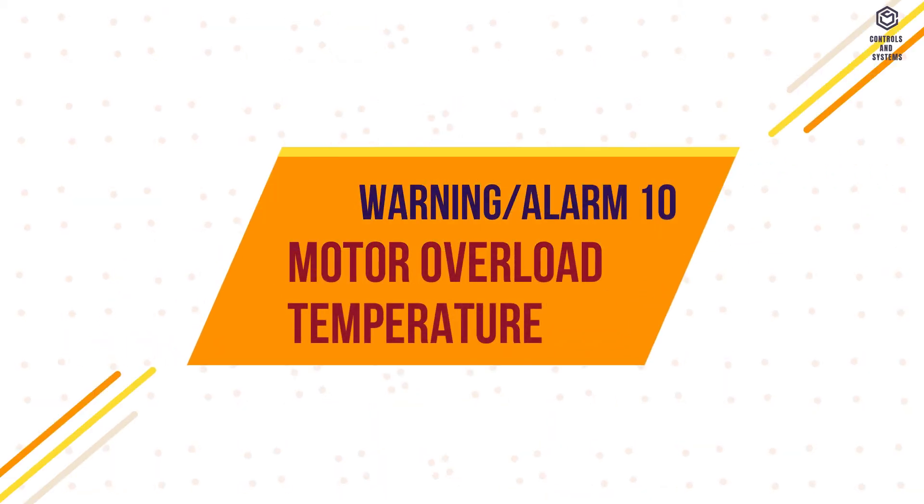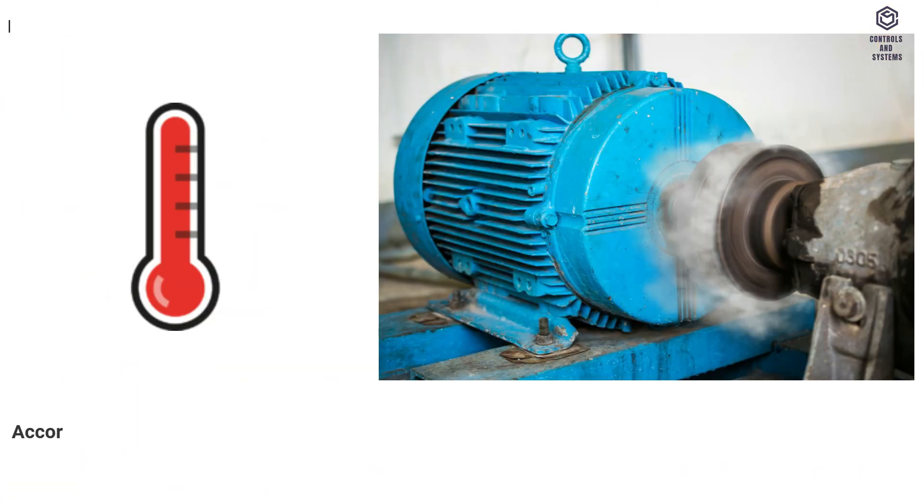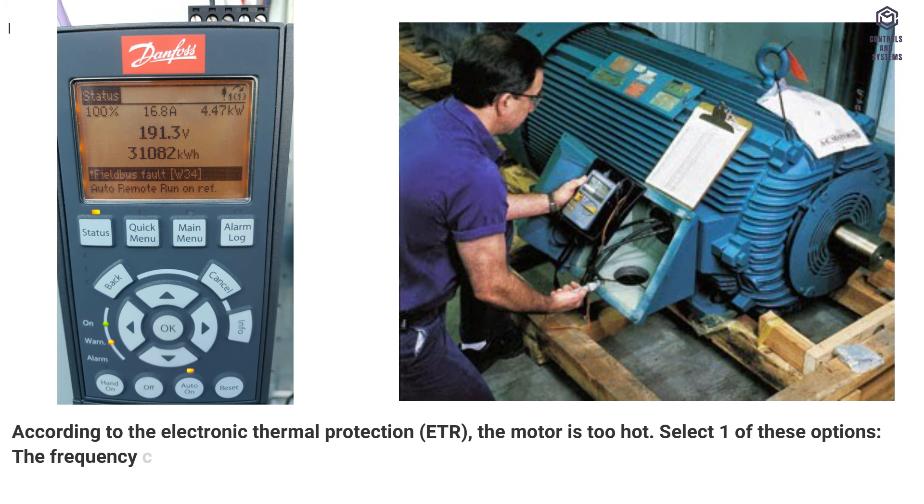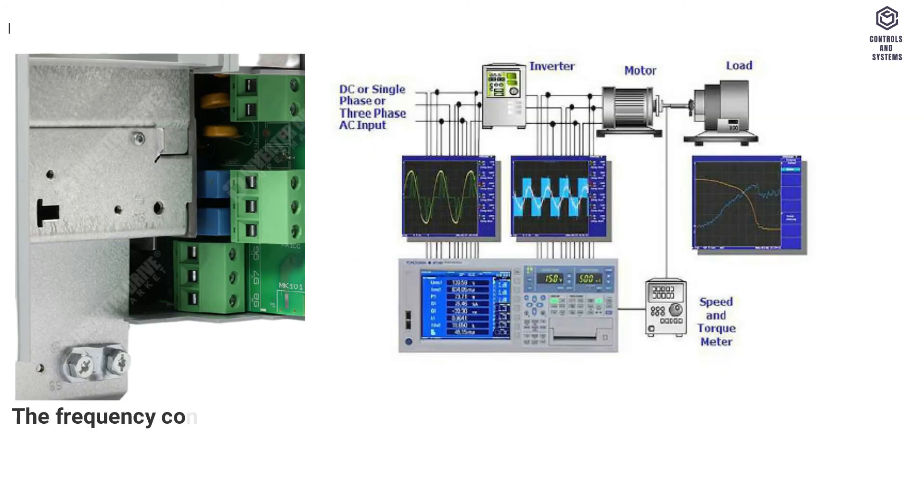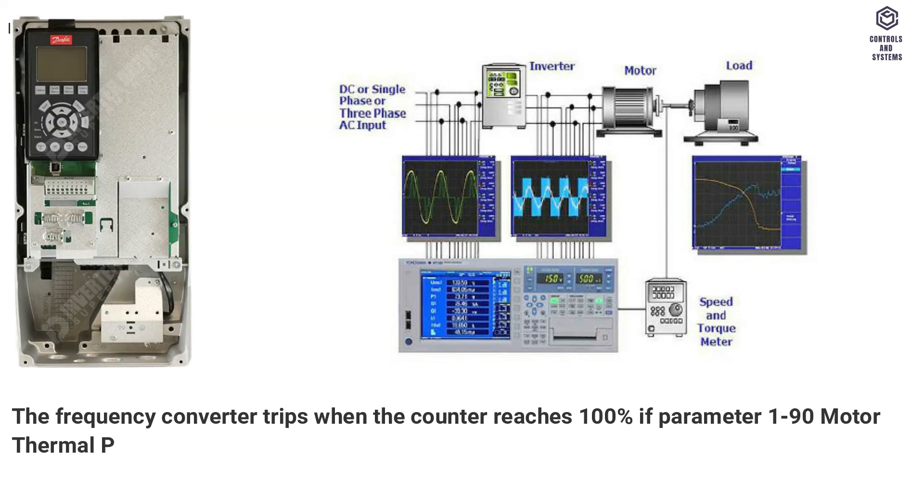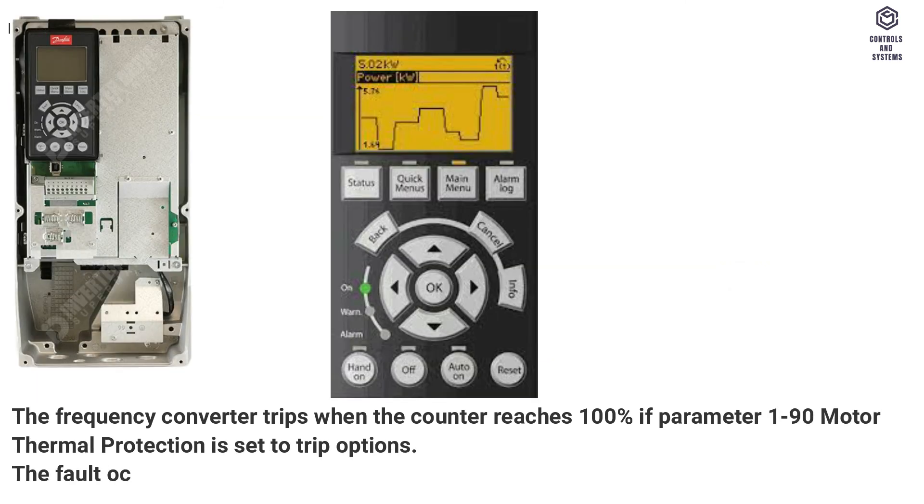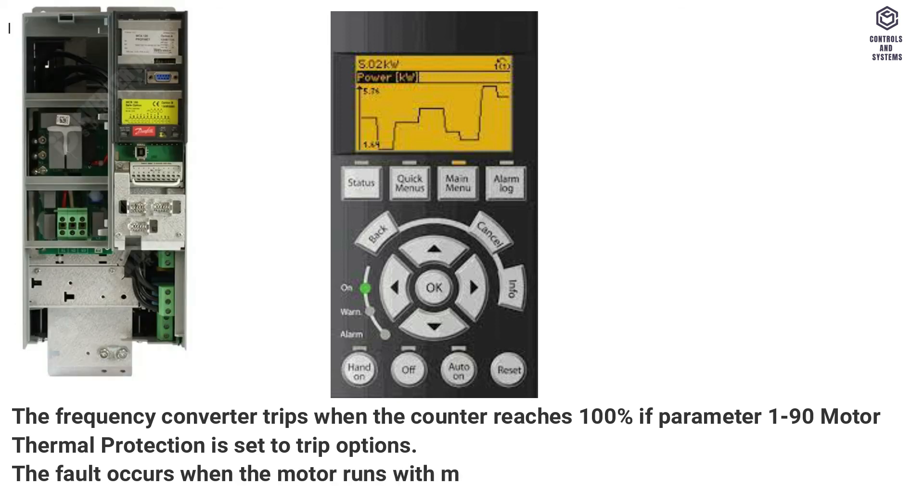Warning, Alarm 10, Motor Overload Temperature. According to the electronic thermal protection, ETR, the motor is too hot. Select one of these options: The frequency converter issues a warning or an alarm when the counter is greater than 90% if parameter 190 motor thermal protection is set to warning options. The frequency converter trips when the counter reaches 100% if parameter 190 motor thermal protection is set to trip options. The fault occurs when the motor runs with more than 100% overload for too long.